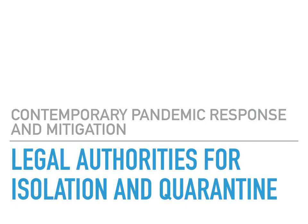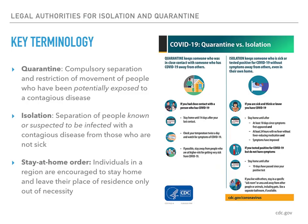Now that we've briefly reviewed key events in U.S. quarantine history, let's turn our attention to contemporary legal authorities for isolation and quarantine. Let's start by distinguishing between these two terms according to the CDC. Quarantine is defined as the compulsory separation, including the restriction of movement, of people who've potentially been exposed to a contagious disease, until it can be determined whether they have become sick or no longer pose a risk to others. This determination could be based, for example, on the time elapsed from their potential exposure.